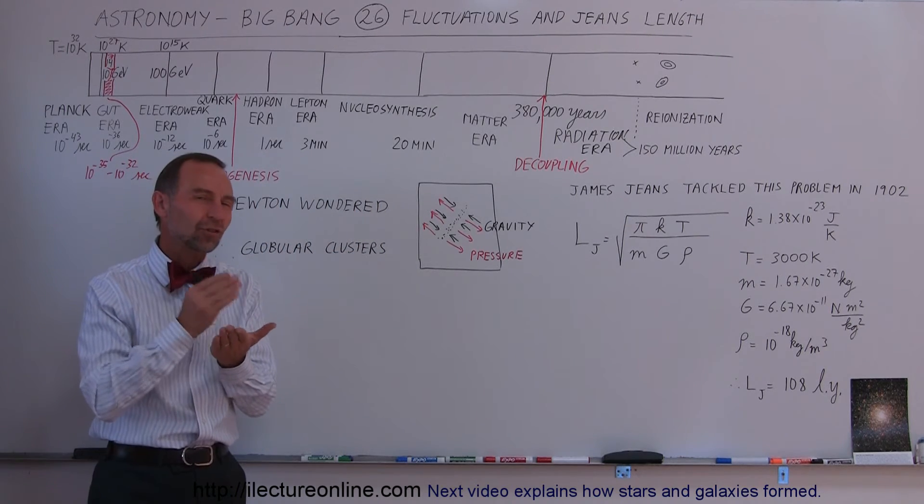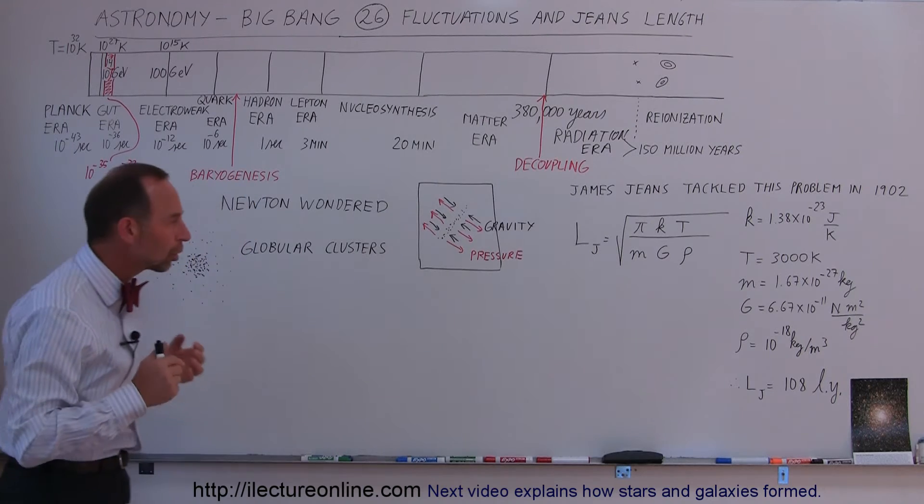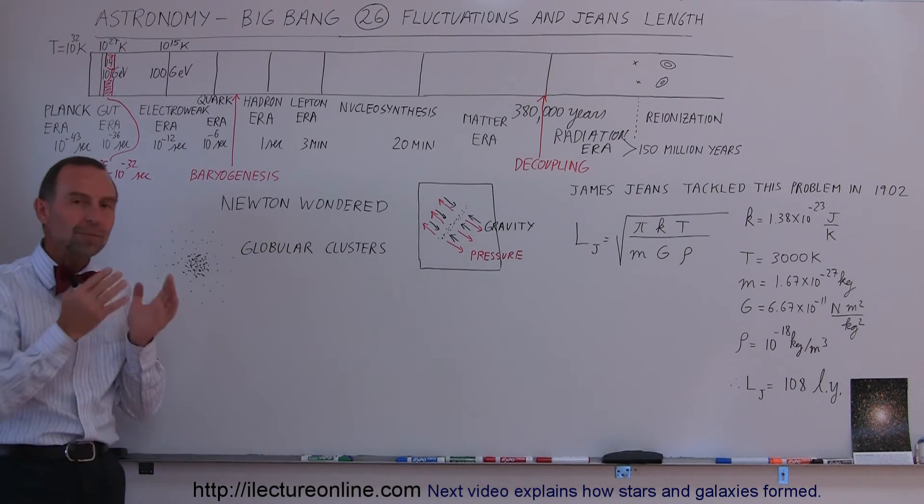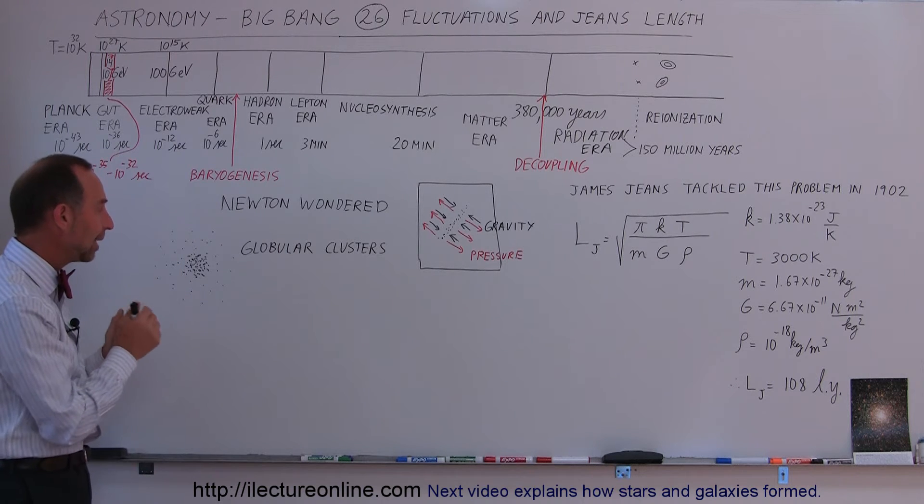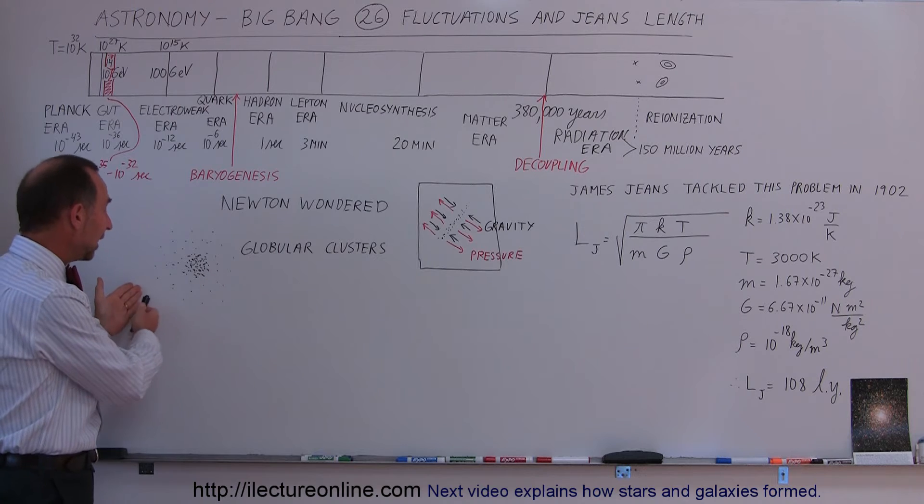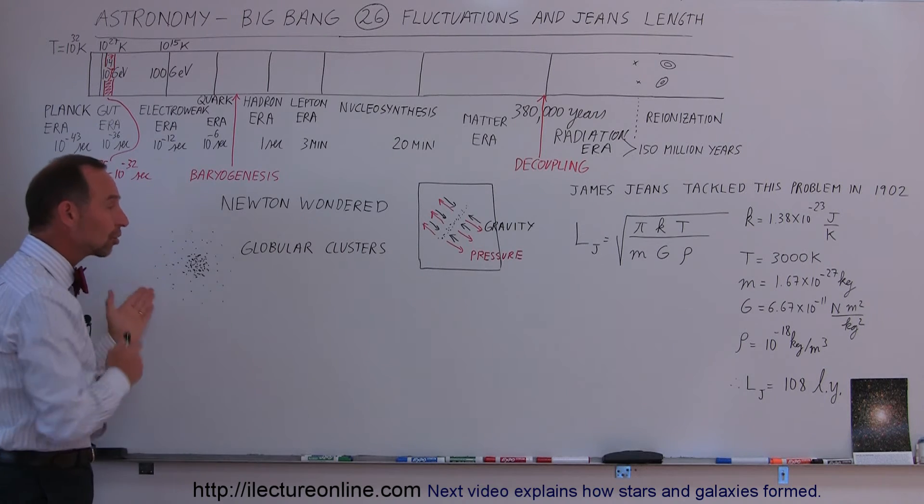Now it turns out some of the earliest structures in the universe are what we call globular clusters. Clusters of stars anywhere from 100,000 to a million stars clustered together like that.